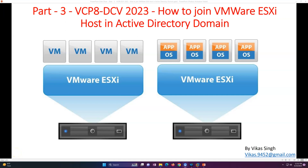Welcome to part three of the VCPA Data Center Virtualization 2023 video series. In this video, we are going to see how we can join an ESXi host to an Active Directory domain, so you can log in through users created in Active Directory and assign permission or login rights through AD users and groups. In part two, we covered how to install ESXi on a virtual machine and did the basic post-installation configuration.